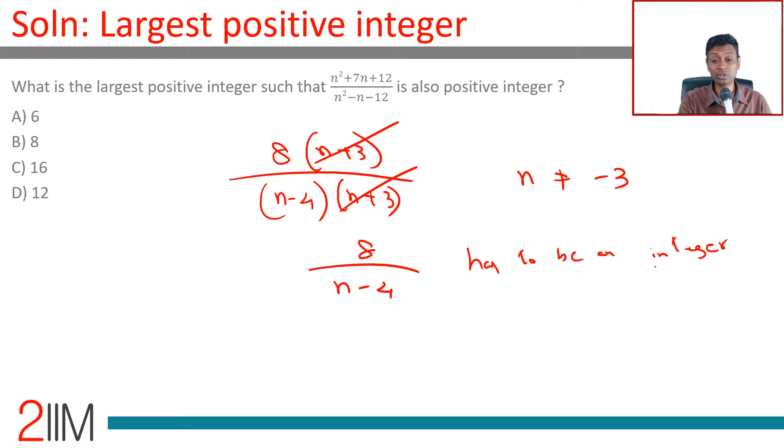So the best case scenario, this is equal to 1. That's when n will be as high as possible. If you put 8 equals n minus 4, n is 12.